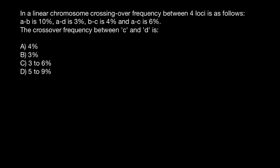Hello and welcome to Nikolai's genetics lessons. Today's question I got from one of my subscribers. In a linear chromosome, crossing-over frequency between four loci is as follows: AB is 10%, AD is 3%, BC is 4%, and AC is 6%. The crossing-over frequency between C and D is what we have to find.